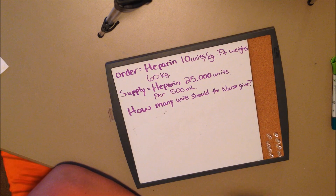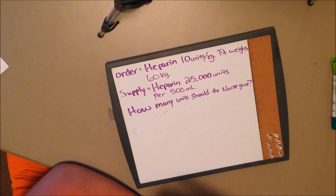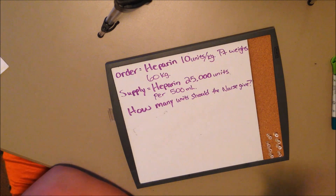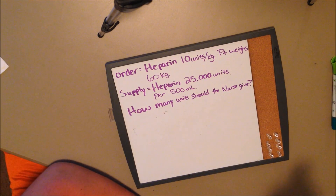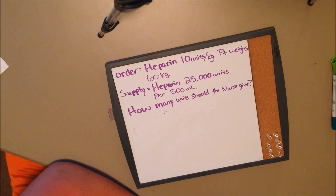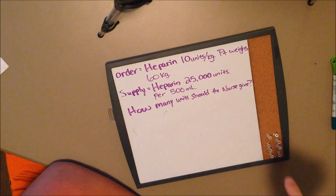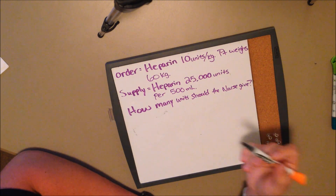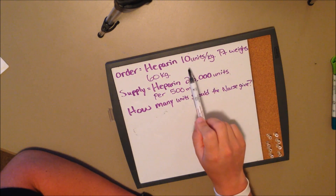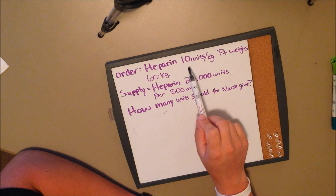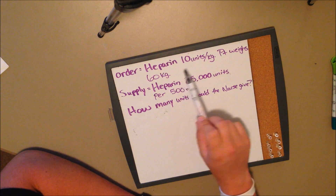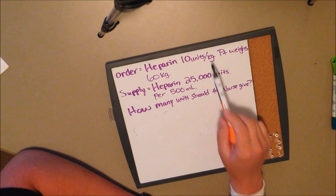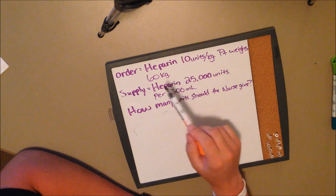This next question is a bit different — it's a kilogram question, and you will get these on every dosage calculation test you take. Our order is heparin 10 units per kilogram, and our patient weighs 60 kilograms. Our supply is heparin 25,000 units per 500 milliliters. The question asks how many units should the nurse give. First, when you have a kilogram question, you'll have a unit of measurement per kilogram — here it's 10 units per kilogram.